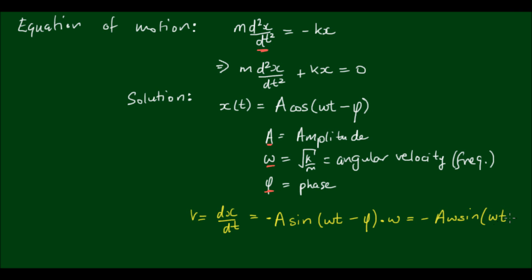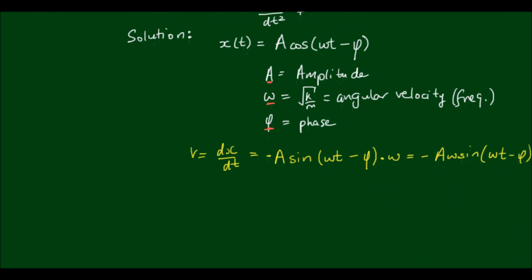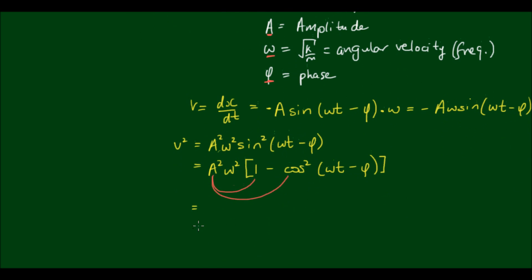So if I was to square this velocity, I would get A squared times omega squared times sine squared of omega t minus phi. And the sine squared can be rewritten as 1 minus cos squared omega t minus phi. And then if I expand this A into the brackets, I shall get omega squared outside of A minus A squared cos squared of omega t minus phi.